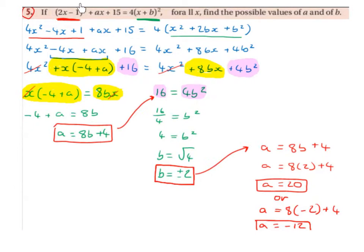If 2x minus 1 squared plus ax plus 15 is equal to 4 times x plus b squared for all x, find the possible values of a and of b.